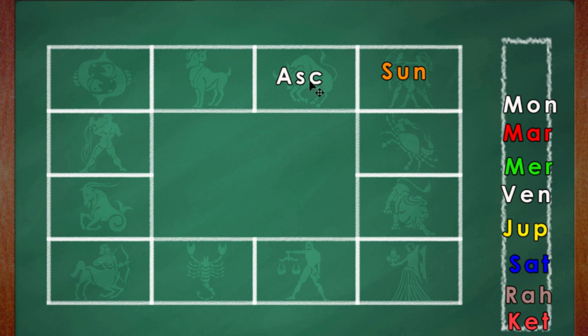Another way of having the same is you would have the ascendant in Taurus or Rishabha Lagna and then the Sun in Karkataka.